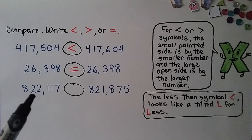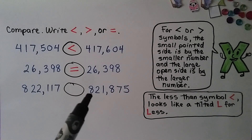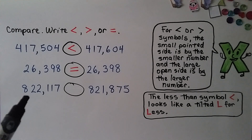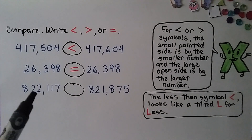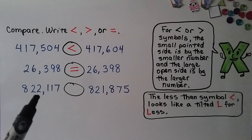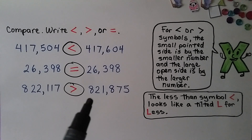Here we have 822,117 and 821,875. They both have an 8 in the hundred thousands place and a 2 in the ten thousands place. We move to the one thousands place and see this has a 2 and that has a 1, so 822,117 is greater than 821,875.